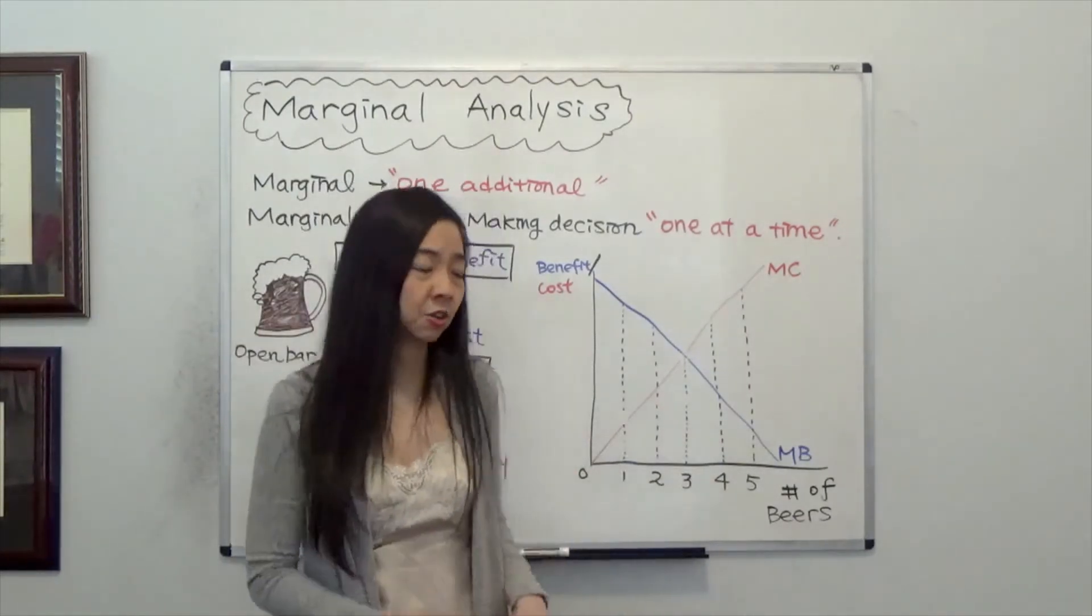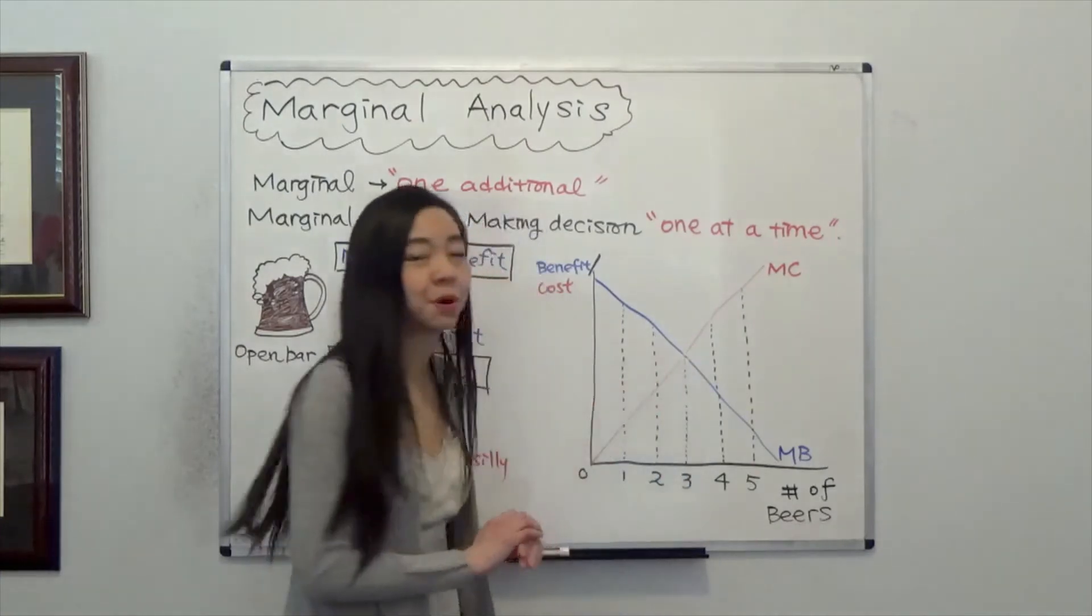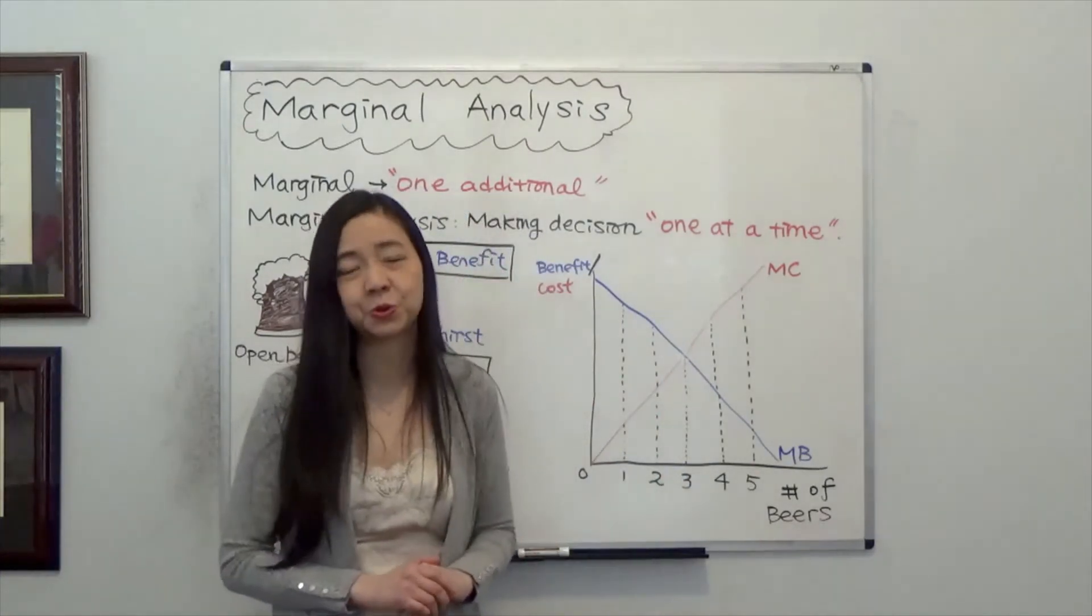If you're rational, you stop at the third can where your marginal benefit is equal to your marginal cost.